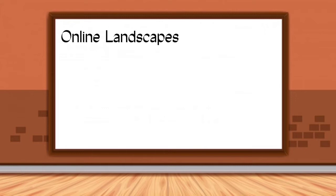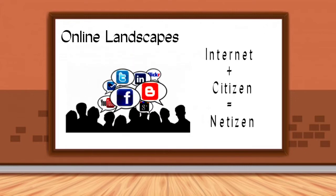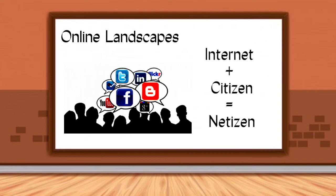Now let us talk about online landscapes. People who go online are called netizens — a combination of the words 'internet' and 'citizen.' Netizens are metaphorically considered as citizens of the virtual world.